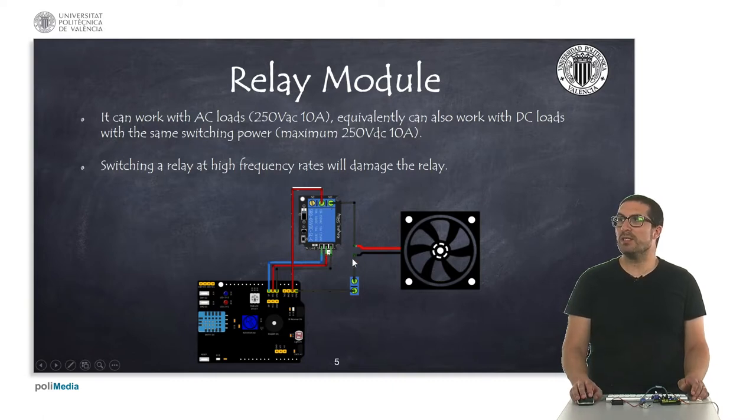So here in this diagram, what you can see is that we have the 5 volts, so this red cable here. Whenever we activate the relay, it will go here and provide 5 volts here to the fan. And then we have the 0 volts signal here which is connected to the ground. And the relay we can activate it and deactivate it here using, in this case, the pin D7.